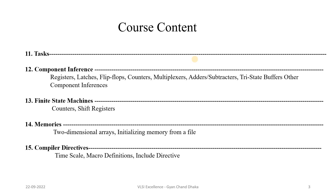Moving forward, we will be covering component interface, where we will write some Verilog HDL code and see how it infers digital hardware — for example, how a register is inferred, how a counter is inferred, how a multiplexer is inferred. Then we will cover finite state machines, seeing different types and how to implement them using Verilog HDL.